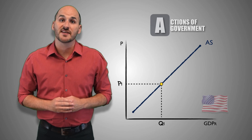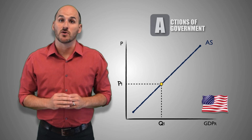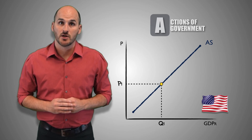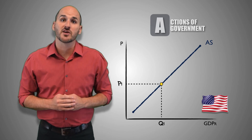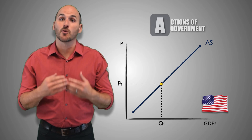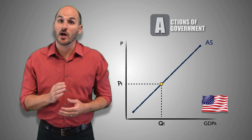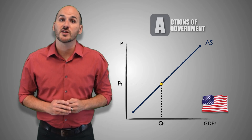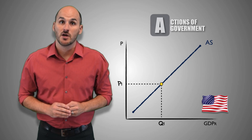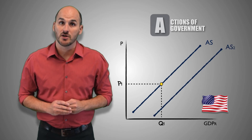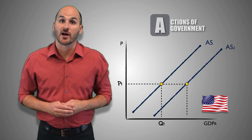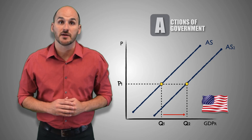Now suppose that the United States Congress signs a bill that deregulates the domestic coal industry. Reducing regulation on domestic coal firms will allow those firms to scale production, hire more workers, and produce greater quantities of coal without limits. This decrease in federal regulation will cause an increase in short-run aggregate supply across the entire economy.